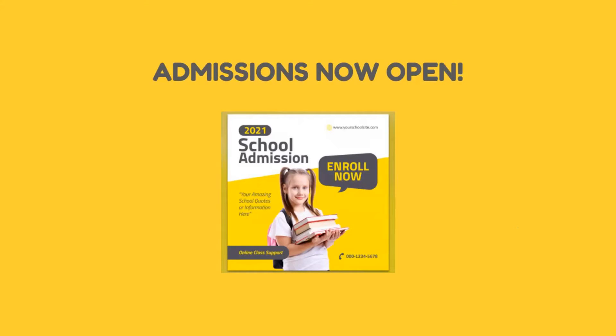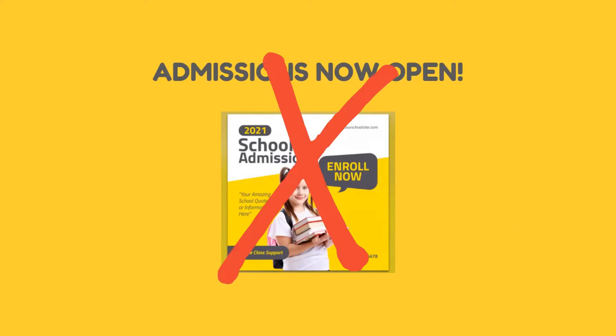This is the wrong technique. Every prospective parent already knows that a preschool has admissions open pretty much 24/7 — unless your school is so popular that you actually have to close admissions. What I suggest instead is that rather than putting up an 'admissions open' board, it's better to put up an 'admissions closed' board. That's what will actually build your brand — people will think this school must be doing something great.